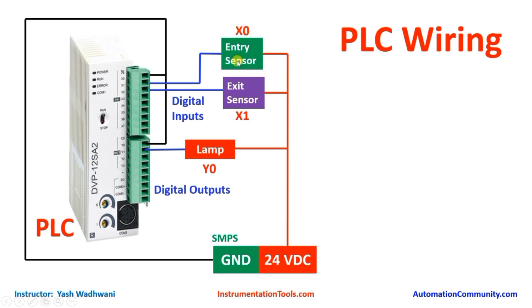The other terminal of the entry sensor we will connect to X0, and the other terminal of the exit sensor we will connect to X1. Remember: X0 is our entry sensor and X1 is our exit sensor. We have one output, a lamp, that will glow whenever the warehouse is full. One terminal of the lamp connects to 24-volt supply and the other terminal connects to Y0. The common of this output connects to the ground of the SMPS.